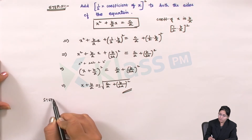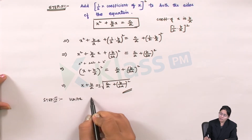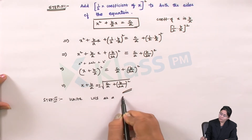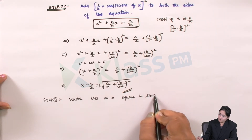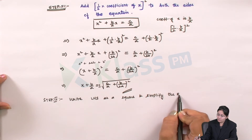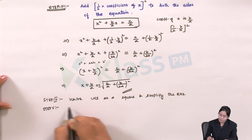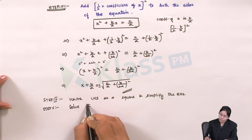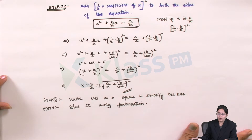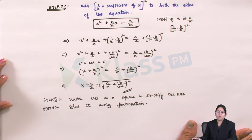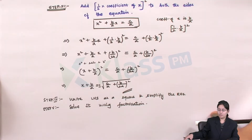Step 4: Write the LHS as a perfect square and simplify the RHS. Step 5: Solve it using factorization. Now we will solve some problems based on this so it becomes easy to understand. Let us take Exercise 5.3 from your math textbook, page number 180.